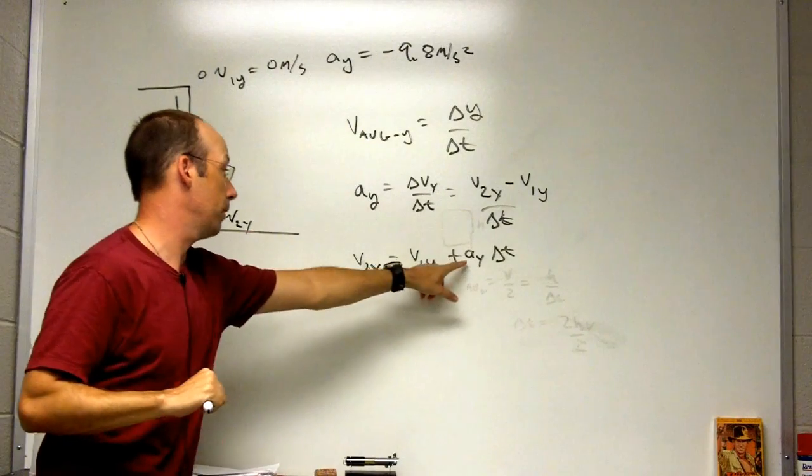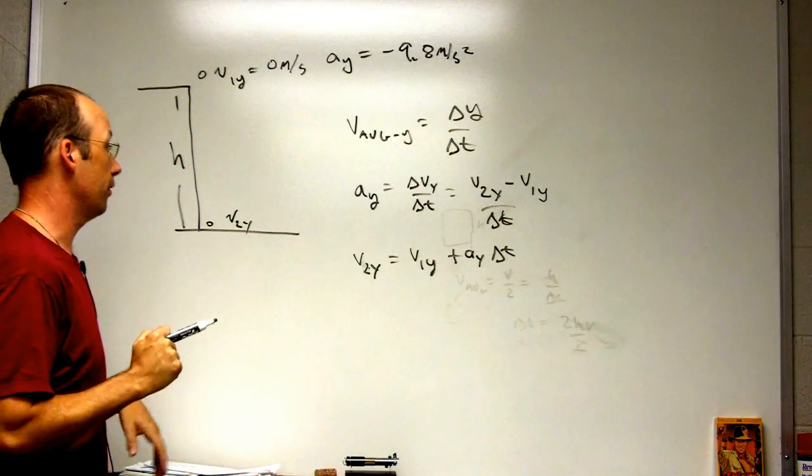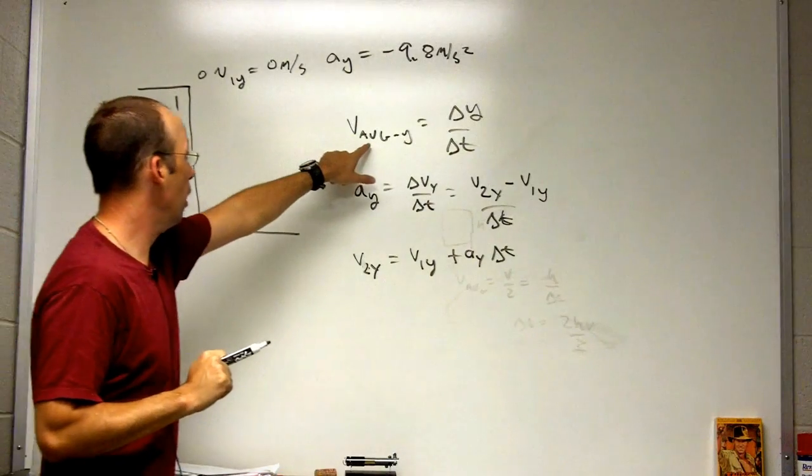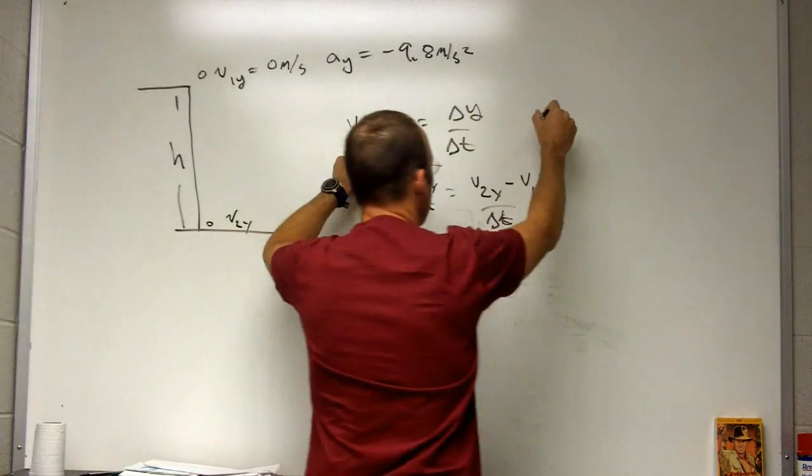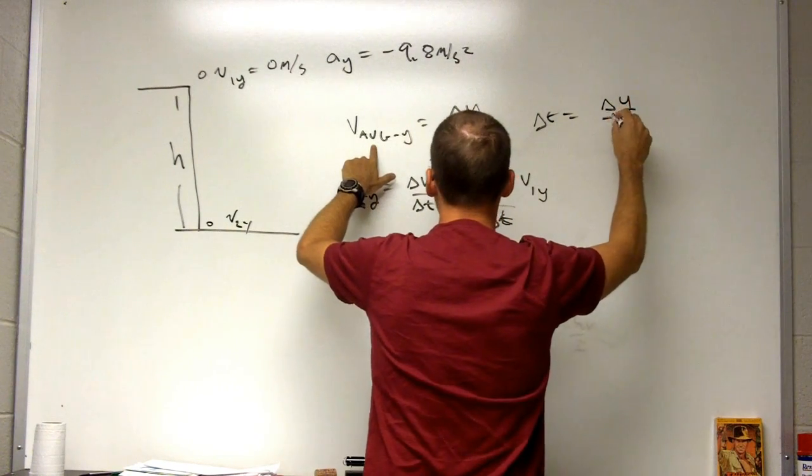I know that is a negative value but I'm going to leave the plus right there. But I don't know delta t. So up here I can solve for delta t. Delta t equals the change in y over the average velocity in the y direction.